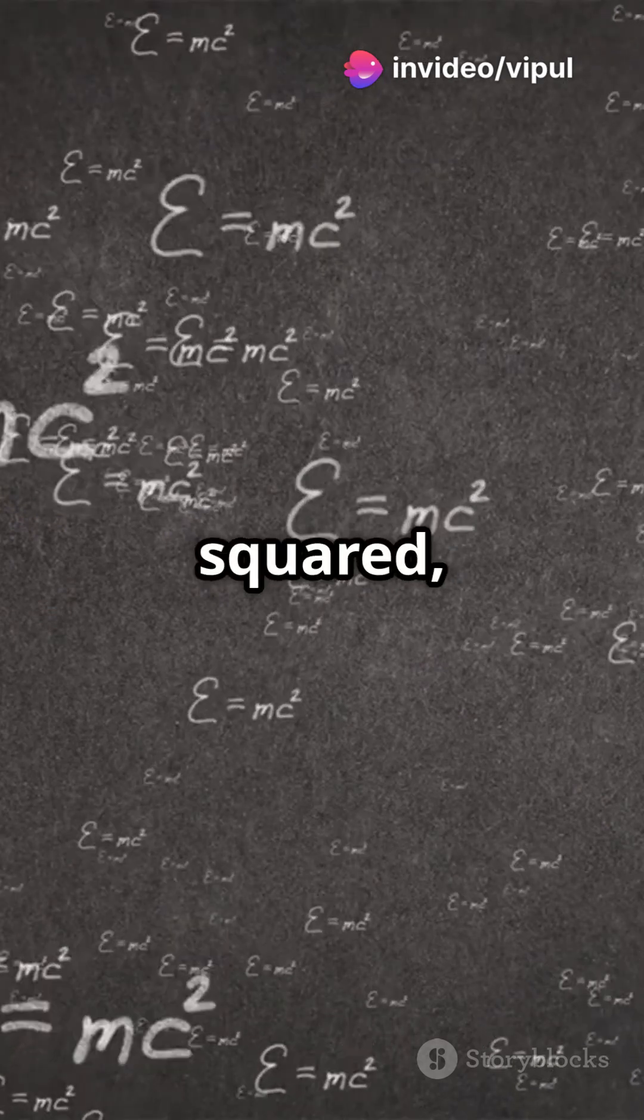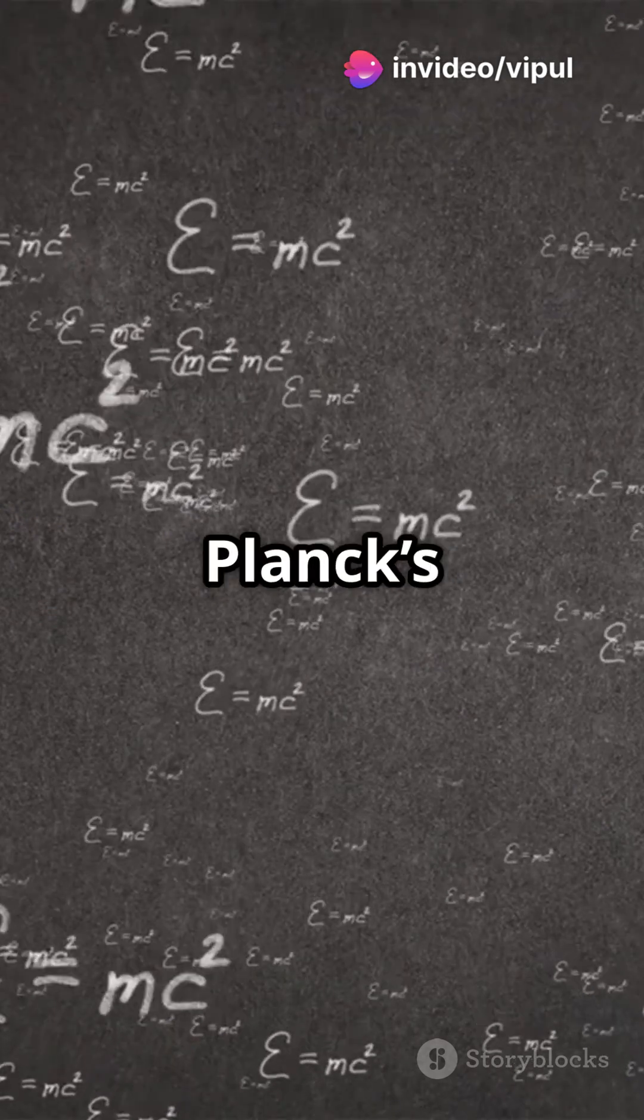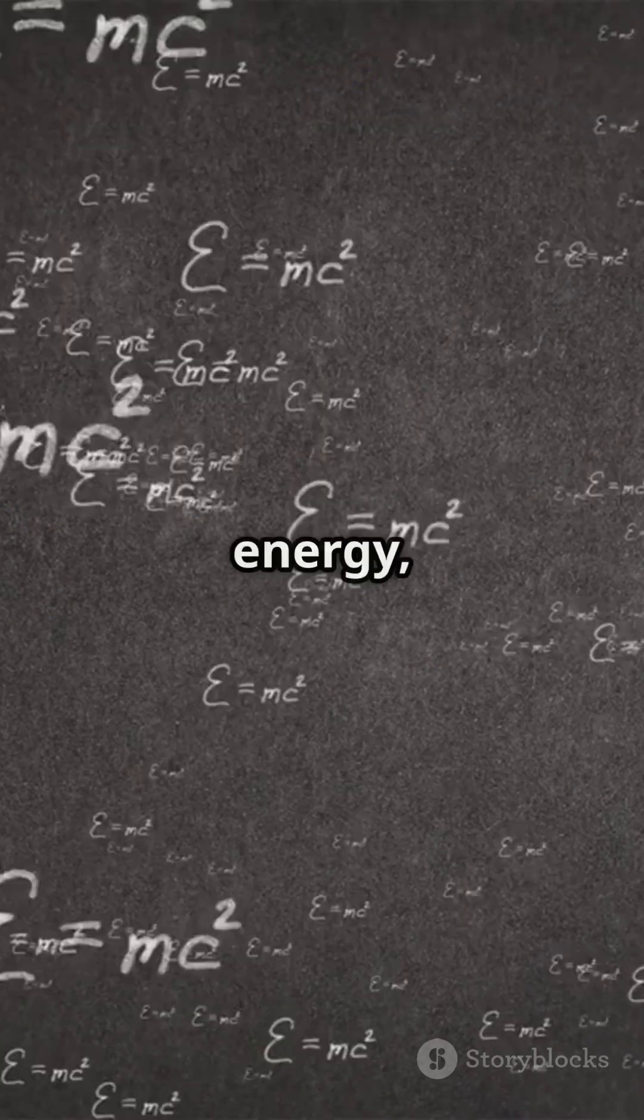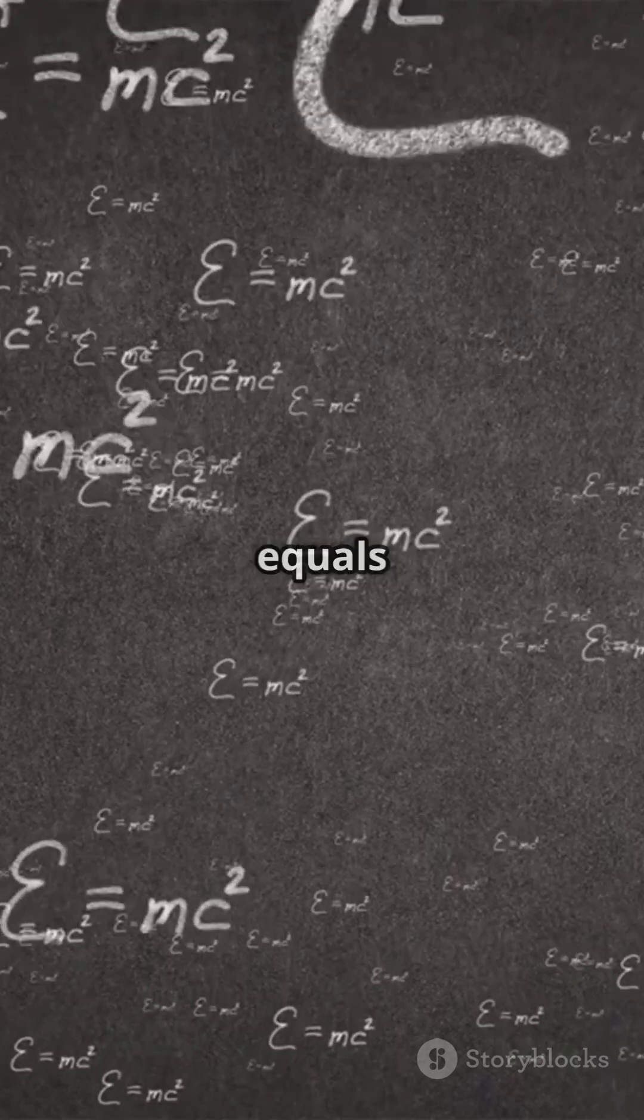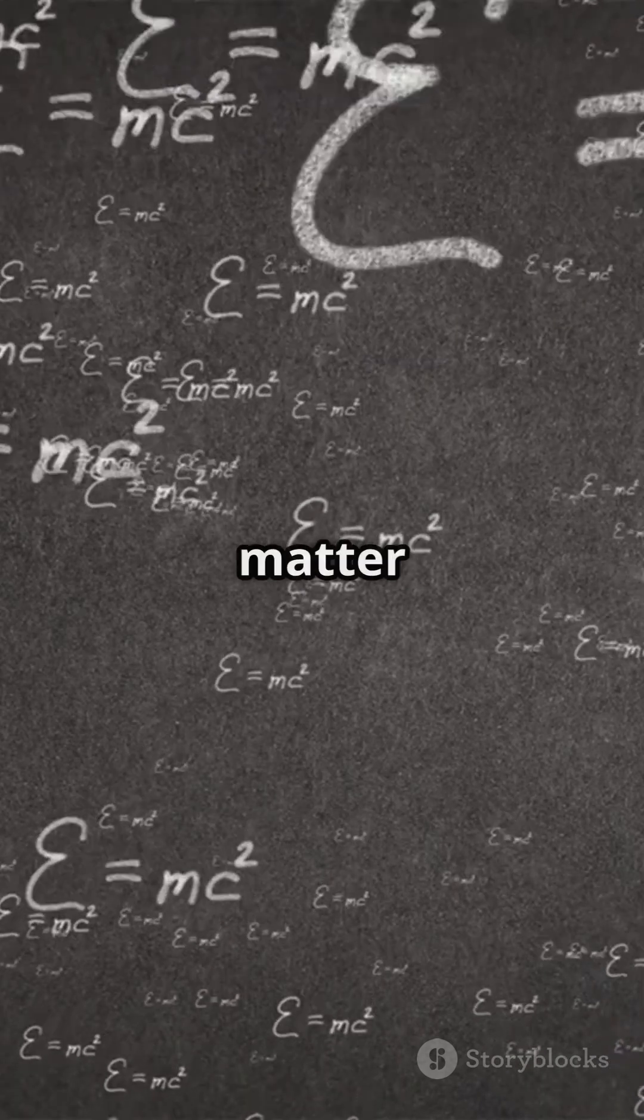Using Einstein's E equals mc squared, which is particle energy, and Planck's E equals h nu, which is wave energy, he combined them to get lambda equals h over p, the famous matter wave equation.